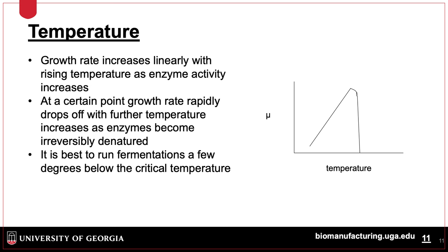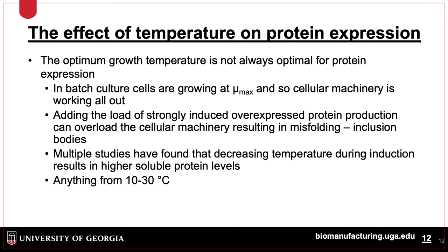Growth rate increases with temperature until the temperature limit of the organism, at which point cellular machinery degrades, leading to cell death. Temperatures can increase through heating the system or through exothermic processes in the cell, as observed in steaming mulch piles. Temperature also has an effect on protein expression; growth at maximum temperature puts a strain on cells, which can result in inclusion bodies or denatured proteins.